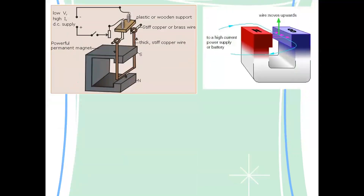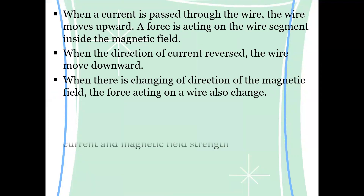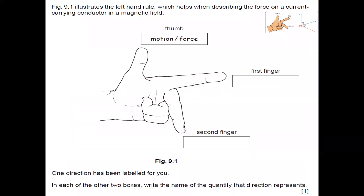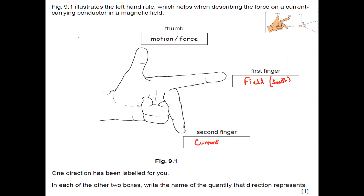We always use Fleming's Left-Hand Rule — also called the motor rule — to find the direction of the force on a current-carrying conductor. The thumb represents the force or motion of the wire. The first finger (index finger) represents the magnetic field, always pointing from north to south. The second finger represents the current. I will give you more examples to work out the direction of a force on a current-carrying conductor.